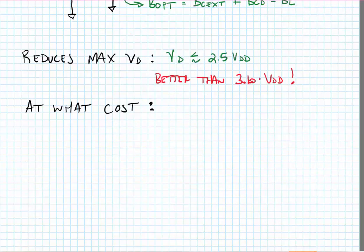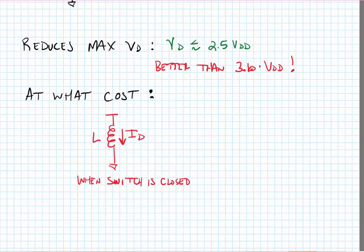So the question is, what is the cost of using a finite supply inductor instead of a choke? Well, when the switch is closed, we have basically the supply network being shorted to ground through the inductor.